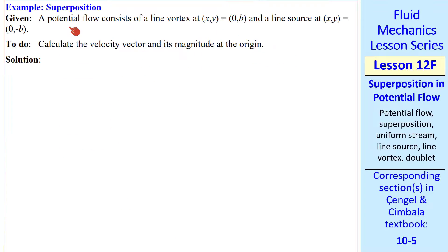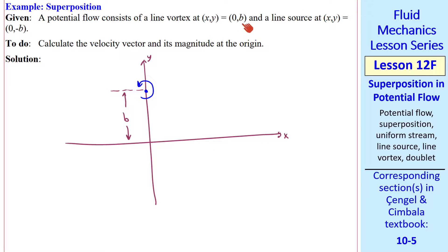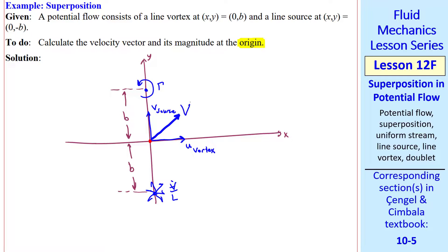Finally, I'll do an example problem. We have a potential flow that consists of a line vortex at 0b, and a line source at 0 negative b. We want to calculate the velocity vector and its magnitude at the origin. I make a sketch. The line vortex is here at x equals 0 and y equals b, and the source is down here at x equals 0 and y equals minus b, and we're interested in what's going on at the origin. Qualitatively, the vortex causes a velocity to the right at the origin, and the source causes a velocity up at the origin, and the resultant vector sum of these is v.